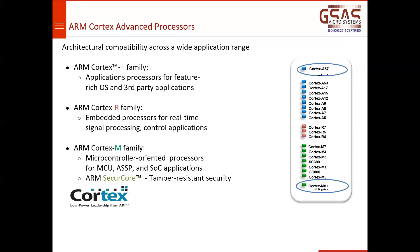In the M series, we have M0, M0+, M3, M4, M7, M33, M23, M55, and M85 — these are the various ARM Cortex-M processor series. Similarly, for Cortex-A, we have Cortex-A53, A57, which are 64-bit processor cores, whereas Cortex-A5, A7, A8, A9, A12, A15, and A17 are 32-bit processor cores.